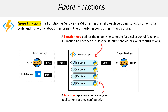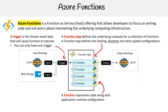Then you have the functions themselves. These represent code along with application runtime configuration. You can specify that you want this to be a Python function, a .NET function, etc. There's always going to be a trigger — a trigger is the chosen event data that will cause the function to execute, and you can only have one trigger.